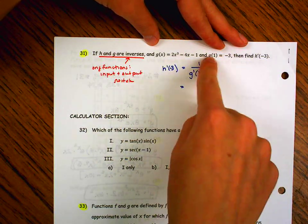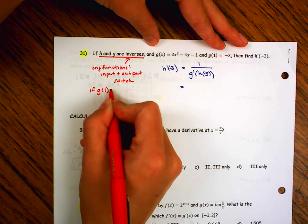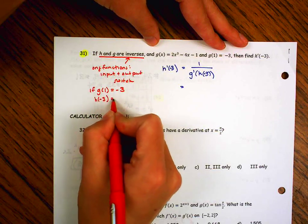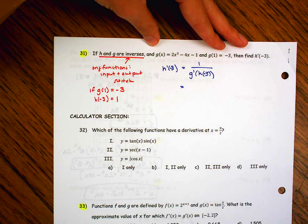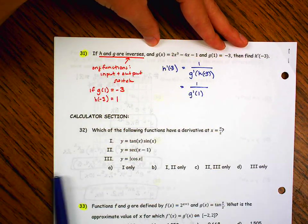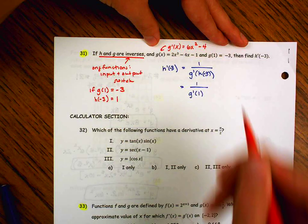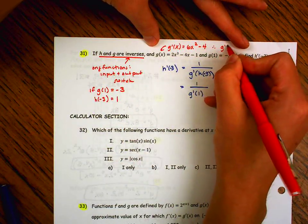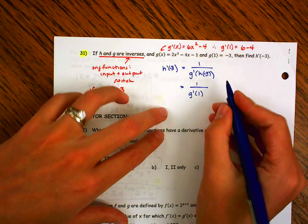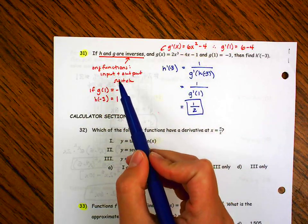Well, we don't have anything about h of negative 3, but we said for the original functions, the input and the output switch. So notice, if g of 1 is equal to negative 3, and for inverses, inputs and outputs switch, that means that h of negative 3 should give me a value of 1. So that I have 1 over g prime of 1. Then, well, I need to figure out what g prime of 1 is. Well, fortunately for me, they gave me what g was. g prime of x, real fast. That's going to be 6x squared minus 4. Well, we need to know what that is at 1. So g prime of 1 is going to be 6 minus 4. So that's going to give me a value of 2. So that's going to give me a value of 1 over 2. So make sure you know this formula, and make sure you know that for inverse functions, inputs and outputs switch.